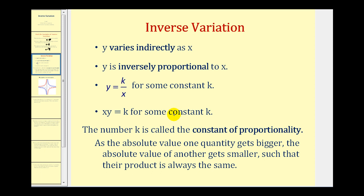More formally, these all represent inverse variation: Y varies indirectly as X; Y is inversely proportional to X; the equation Y equals K divided by X for some constant K; as well as X times Y equals K. If we cross multiply Y equals K/X, we get X times Y equals K. The number K is called the constant of proportionality. As the absolute value of one quantity gets bigger, the absolute value of another gets smaller, such that their product is always the same.